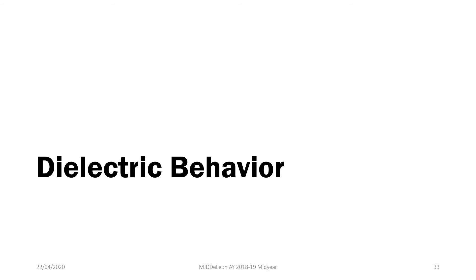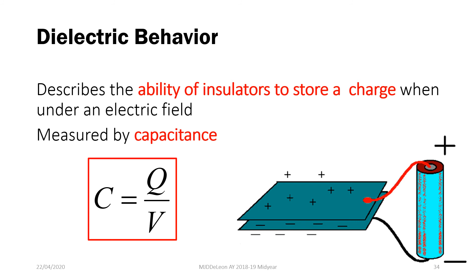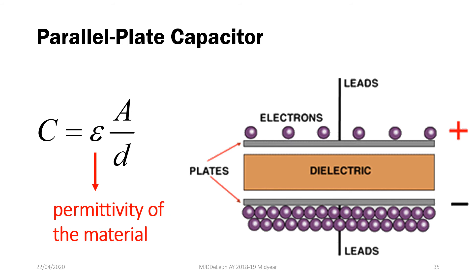Another important electrical property of materials is what we call dielectric behavior. Dielectric behavior describes the ability of insulators to store charges when under an electric field, and is usually measured by capacitance. Capacitance is equal to Q over V, where Q is the charge and V is the voltage applied. For a parallel plate capacitor, the capacitance is equal to epsilon times A over D, where A is the area of the parallel plates, D is the distance between the plates, and epsilon is the permittivity of the material — the quantity that gives you the dielectric behavior. Higher permittivity means the material holds charges better.